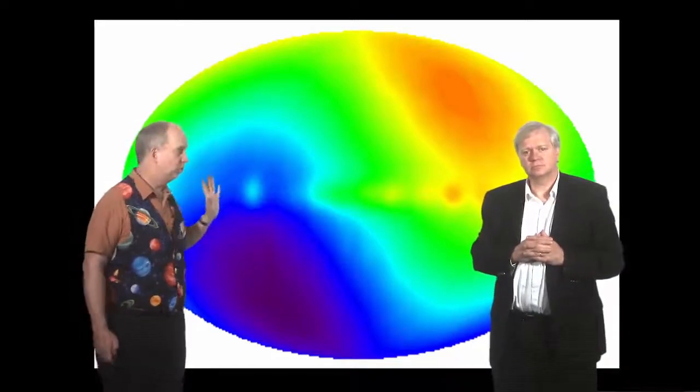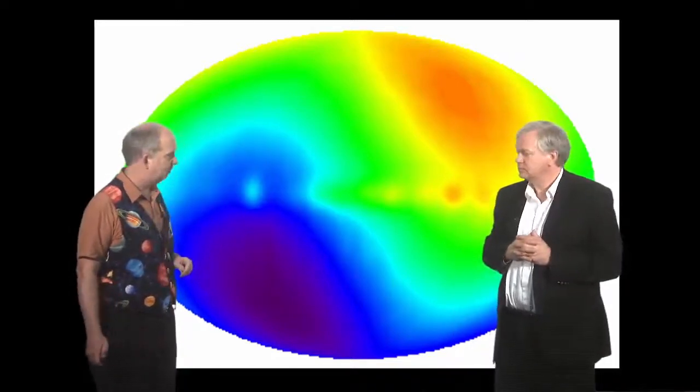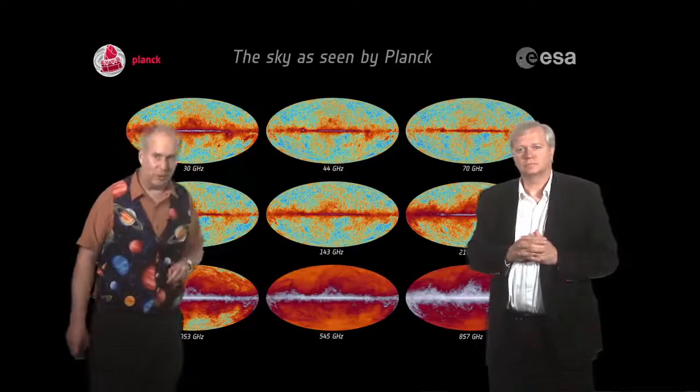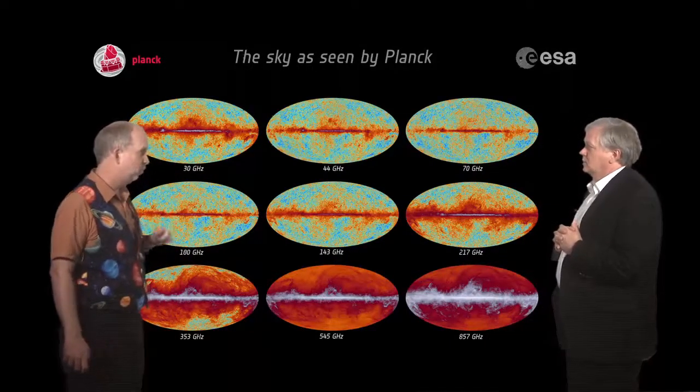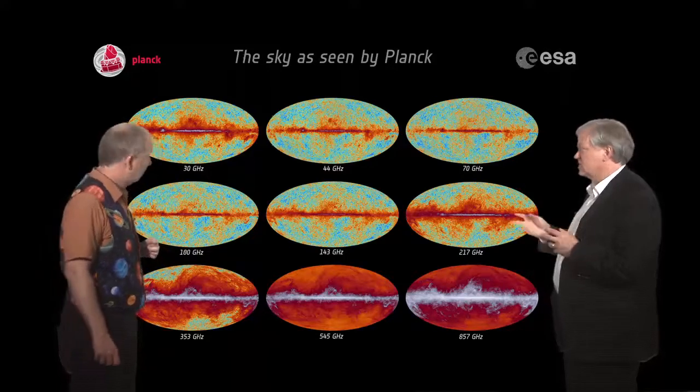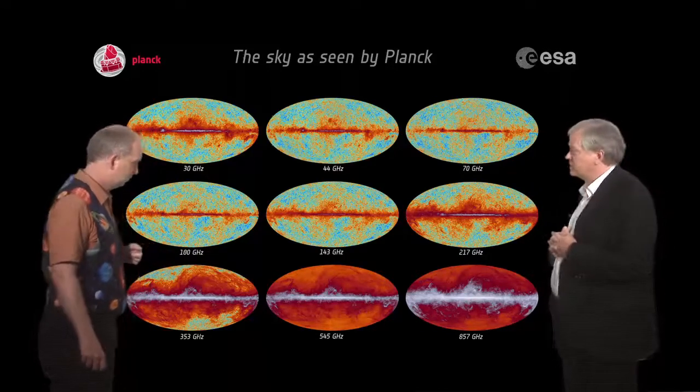Anyway, let's take that out. So let's take out, this is called the dipole. So let's take that out, take out the effect of our motion. And here's what's left over. This is now data taken from the best measurement to date, which is from the Planck satellite launched by the European Space Agency. So this is just really in the last year, this data.